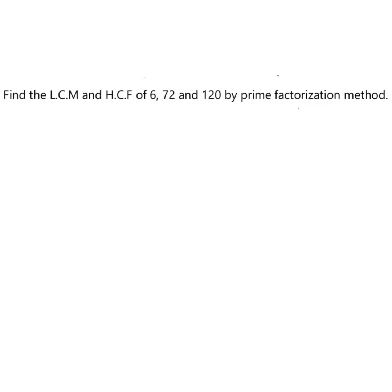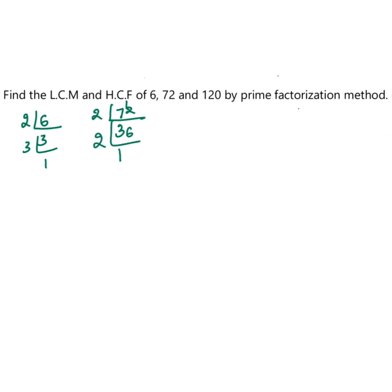To find the HCF and LCM, we will first find the factors. For 6, it is 2 and 3. For 72, the factors are 2, 3, 6, 12, and so on — working through the division step by step.